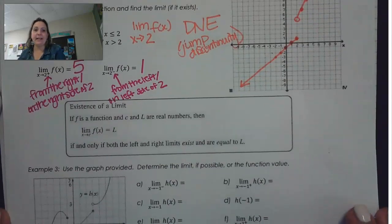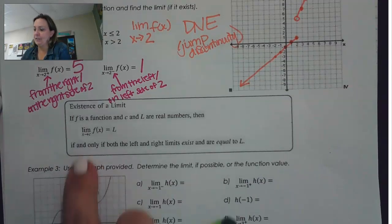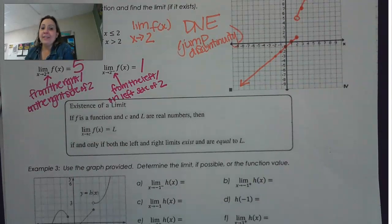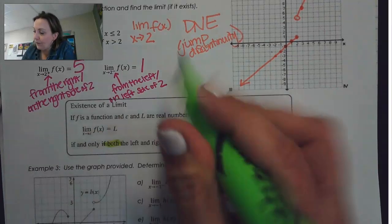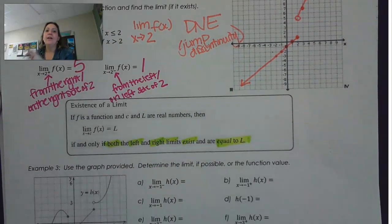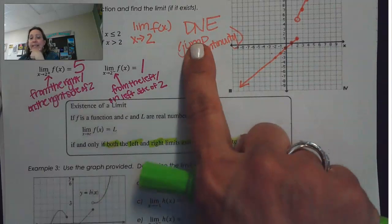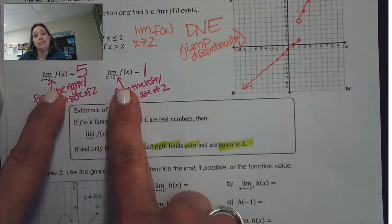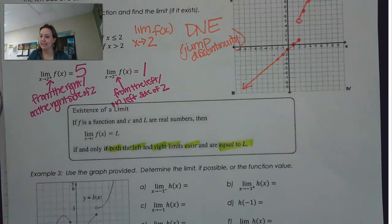Here's the idea of the existence of a limit. If f is a function and c is the value that x is approaching, and L are real numbers, then the limit of f of x as x approaches c is L if and only if both the left and right limits exist and are equal to each other. Here, a right limit exists and a left limit exists, but they're not equal to each other, so that's why this limit does not exist. One-sided limits can be fine, but if we have two one-sided limits that give us the same value, that tells us the actual limit exists.